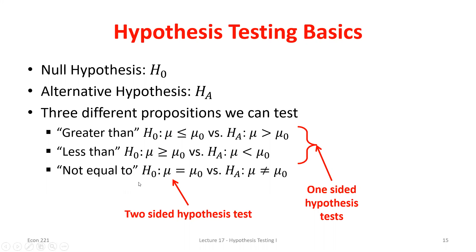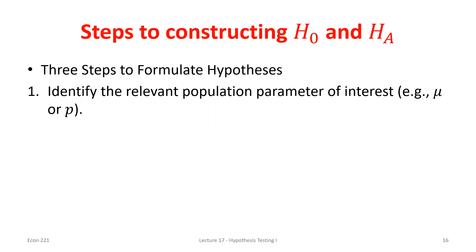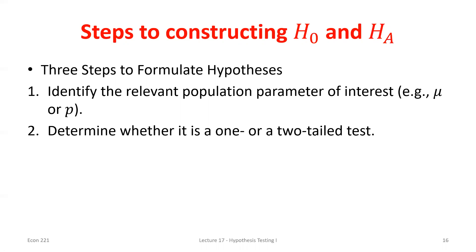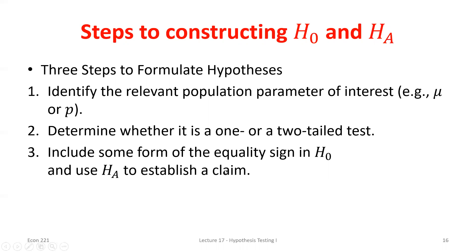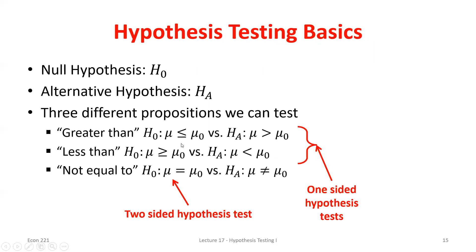Once we start calculating p-values, it becomes important whether it's a one or two-tailed test. Our steps: identify whether we're looking at a population mean or proportion, determine if it's a one or two-tailed test by identifying the null and alternative hypotheses, and include the equality somewhere. I always include the equality in the null — for the two-tailed test, the equal sign is literally the null. For greater than or less than tests, the null becomes less than or equal to, or greater than or equal to.